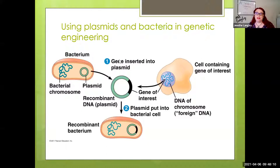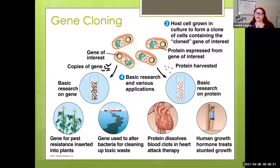Why would this be important? We can take the gene we want replicated, introduce it into a plasmid, put it into a bacterium. The bacterium reproduces and creates more of these plasmids, which are then read by the bacterium to create a product. That product can vary — for example, human growth hormone. When metabolic disorders cause problems with growth and there isn't enough production of that hormone, we can give produced growth hormone to those individuals.